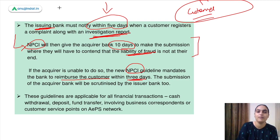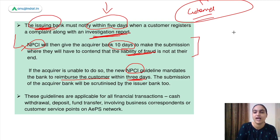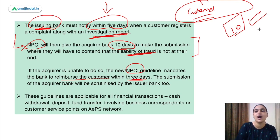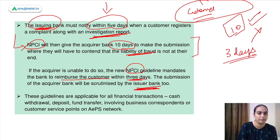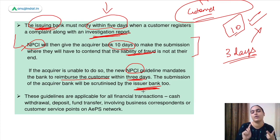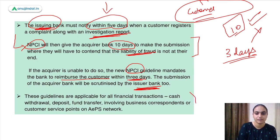To summarize the process: the customer reports to the issuing bank, the issuing bank prepares an investigation report within 5 days, then NPCI orders the acquirer bank to respond. These guidelines are applicable to all types of AEPS financial transactions.